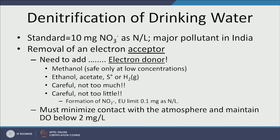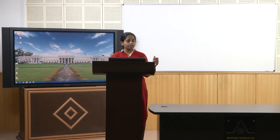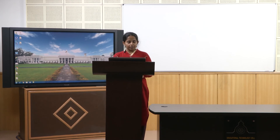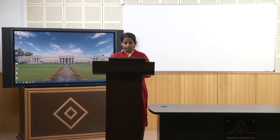During denitrification, contact with the atmosphere must be minimized because air contains oxygen. We are trying to convert nitrate to nitrogen gas. If oxygen is introduced, microbes prefer to use it as an electron acceptor rather than nitrate, since aerobic activity is more energetically advantageous. A review article from 2013 on denitrification will be assigned as reading homework this week.